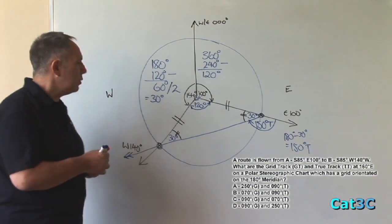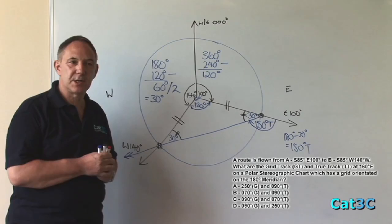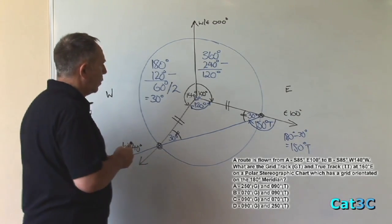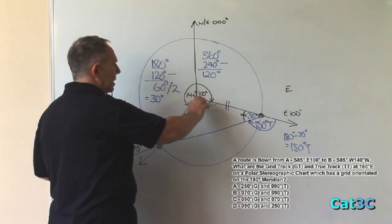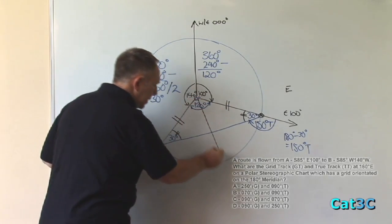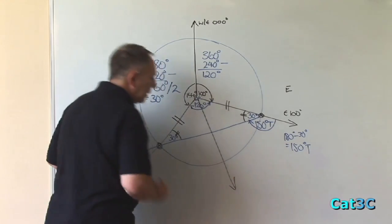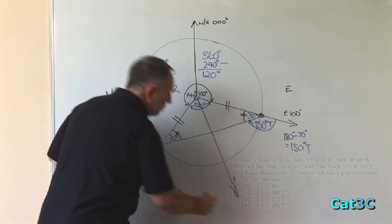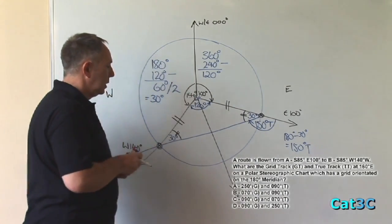Okay, let's move on to 160 degrees east. 160 degrees east is another 60 degrees further around from 100 degrees east which will be down there. Remember that all meridians point from the south pole to north.